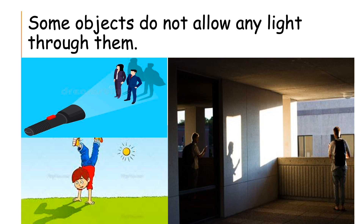Some objects do not allow any light through them. Sometimes your body blocks the light and forms a shadow on the ground. As you can see in the picture, two people are in front of a flashlight and at the back there is a shadow. Look at this little boy wearing a red shirt — the sun is over there and he has a shadow in front of him. And the other example shows a person at a window with a shadow visible.